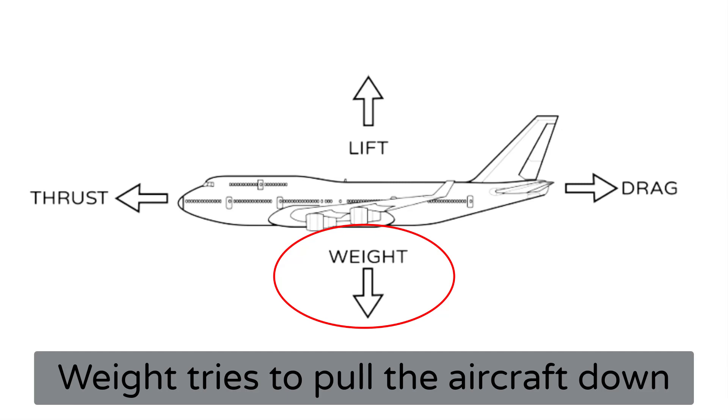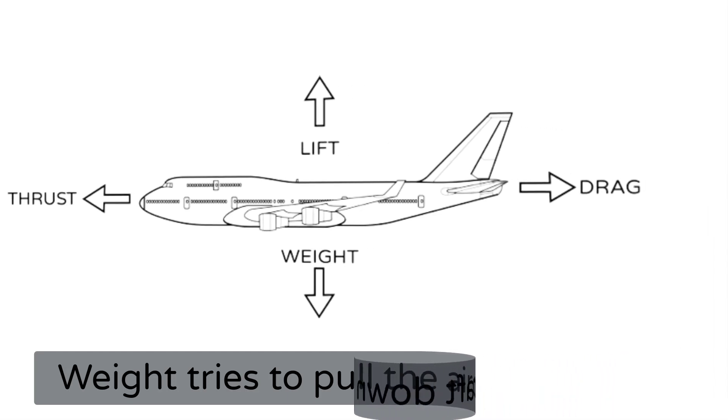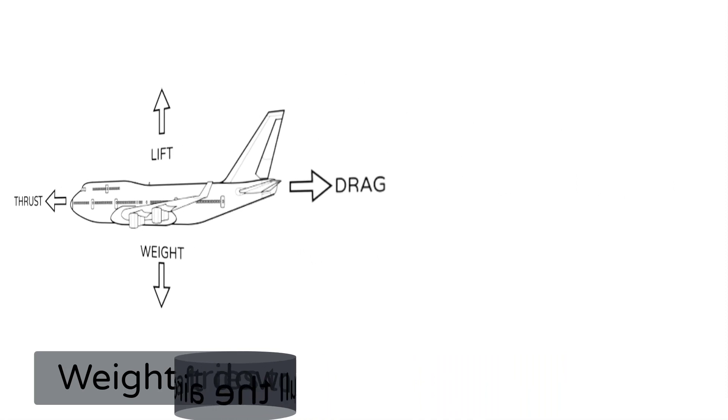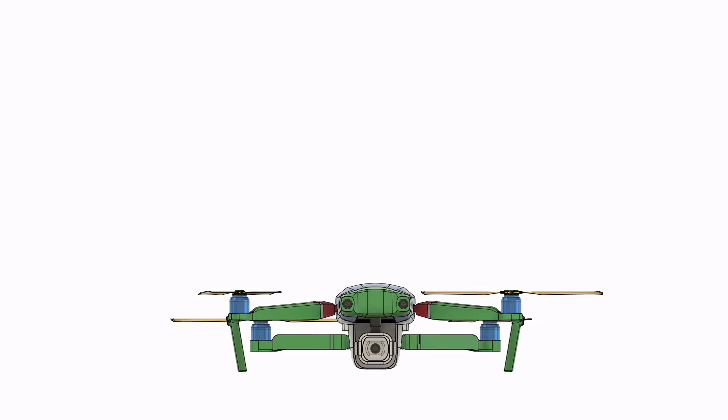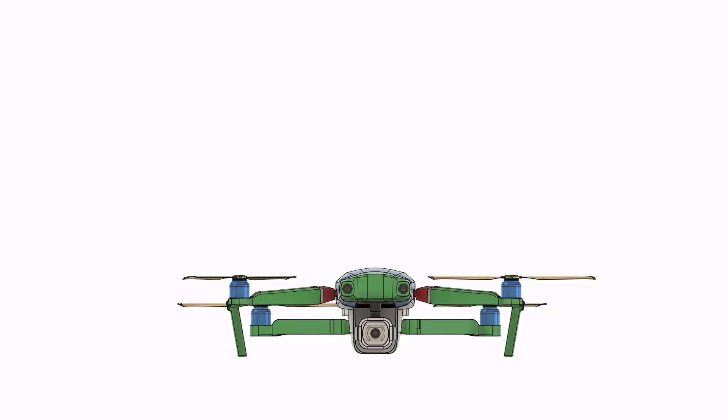To achieve and sustain level flight, the lift must be equal to the weight of the flying machine. Changes in pitch, altitude, and speed necessitate adjustments to the balance between lift and weight. Now, we will be discussing the sources and effects of basic forces discussed previously in the case of quadcopters and other multi-rotor aircraft.